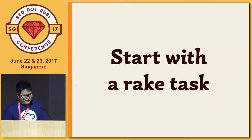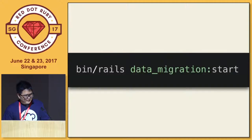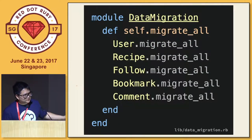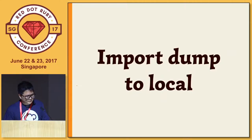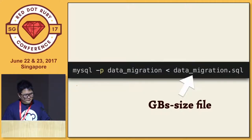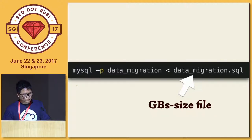We can start with a simple rake task. It's as easy as running a Rails command and hopefully everything will be migrated to your system. You can put whatever you need to migrate and write code to make it happen. First, import the data to your system — your model can connect to the database you want to migrate. It's as simple as one command to import to MySQL.